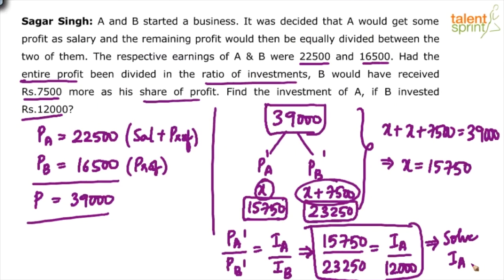Many of you marked the answer as 7,500, but that is not correct. Looking at the ratio, 15,750 and 23,250 are approximately in the ratio of 2:3. If B's investment of 12,000 represents 3 parts, then A's 2 parts would be around 8,000. The precise calculation gives approximately 8,130, so the investment of A is around 8,000.